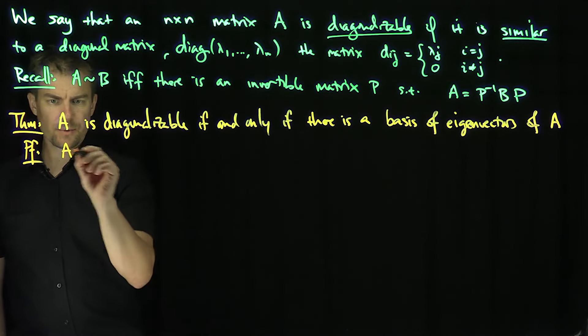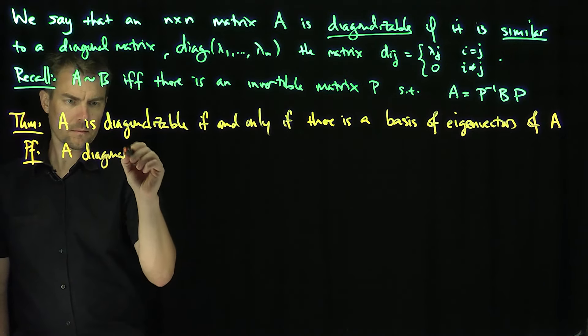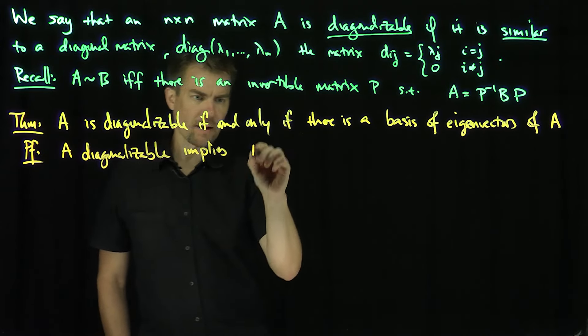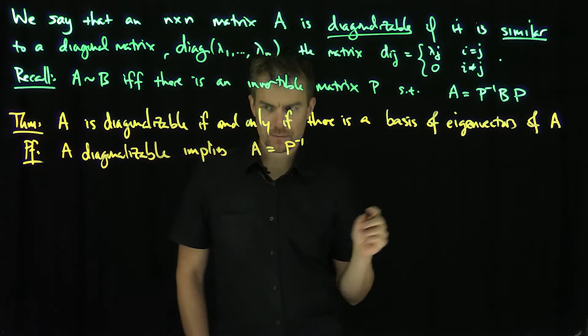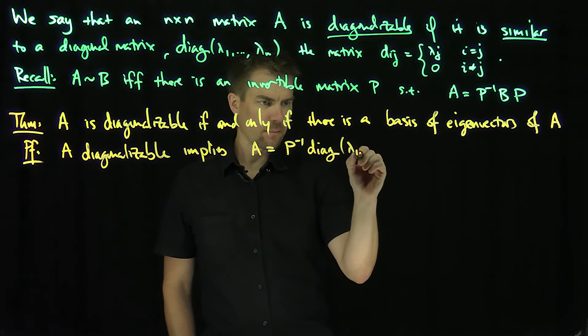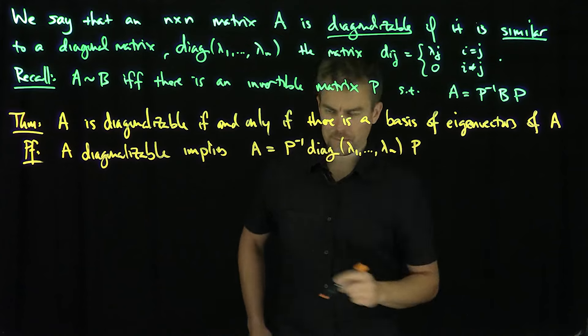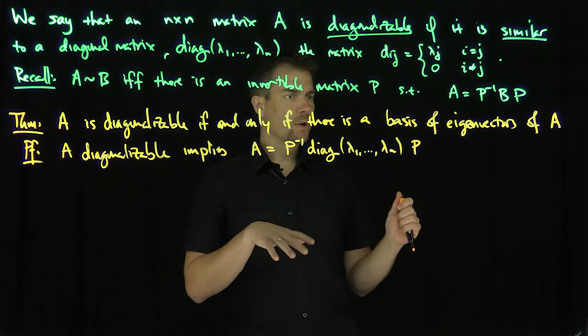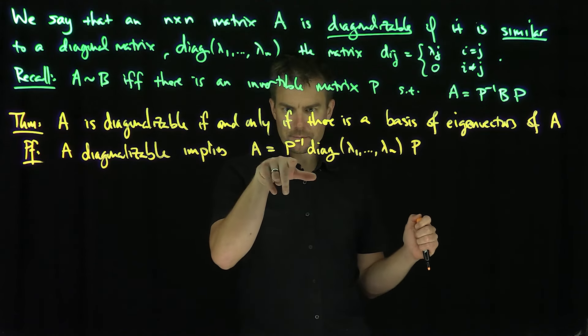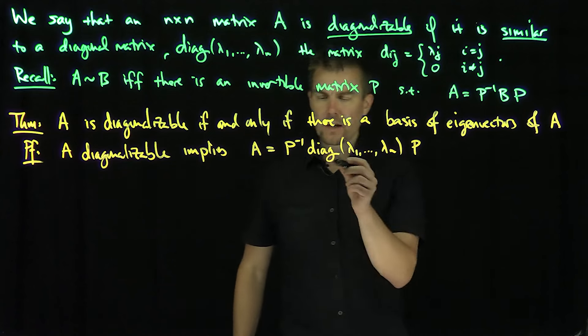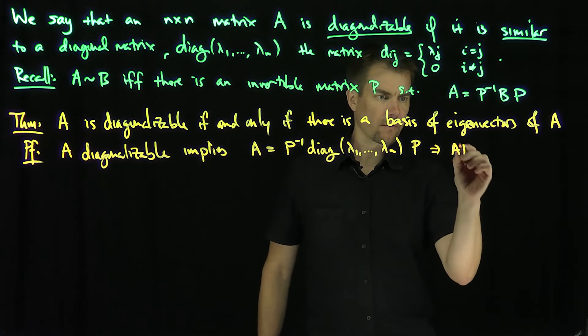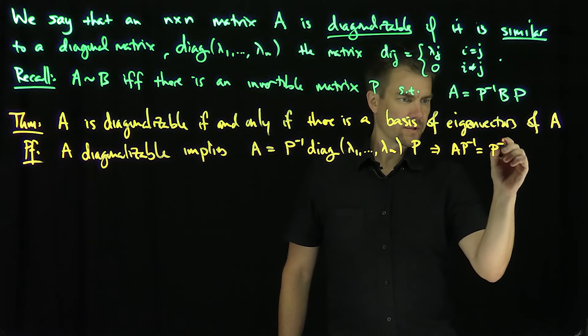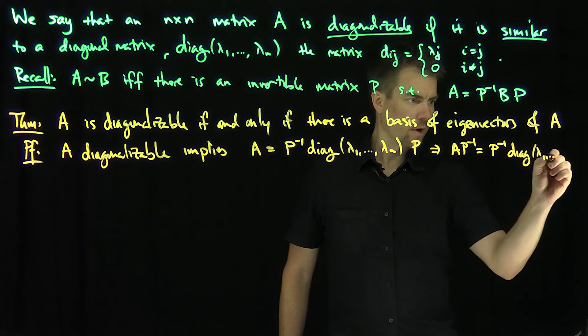If A is diagonalizable, then A equals P⁻¹ diag(λ₁,...,λₙ)P. By applying P⁻¹ to both sides, this says that AP⁻¹ equals P⁻¹ diag(λ₁,...,λₙ).